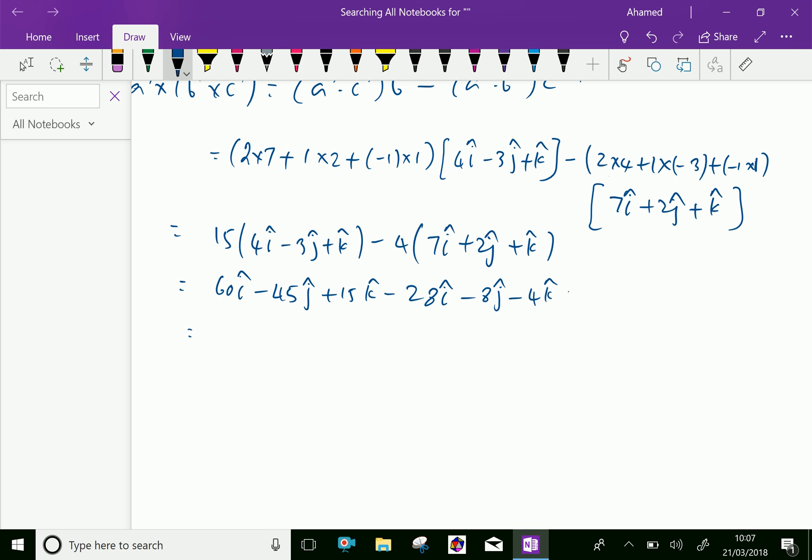Here, 60i minus 28i is 32i, minus 45j minus 8j is minus 53j, and 15k minus 4k is plus 11k.